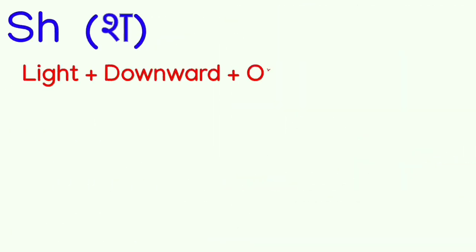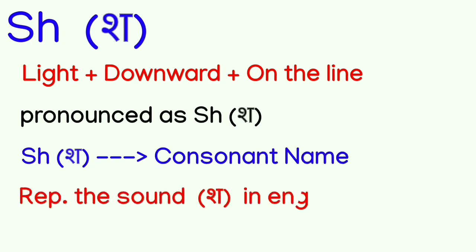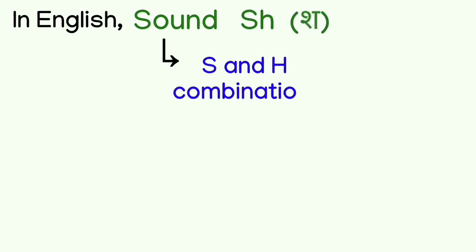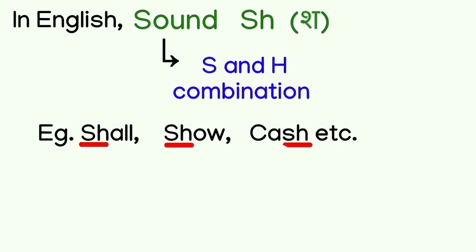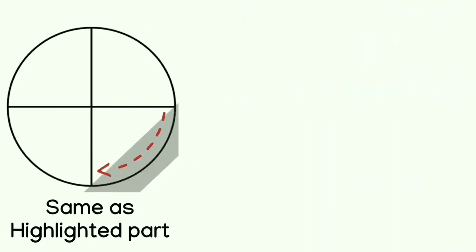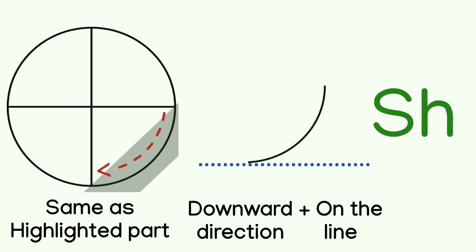The next consonant is SHA. It is a light consonant made in the downward direction on the line. SHA is the name of this consonant. This consonant represents the SH sound in English — like shell, show, cache. Whatever the SH sound is, we represent it with the SHA consonant. In English, the SH sound is written with S and H. We draw this consonant as a curve part in the downward direction. This is our SHA consonant.